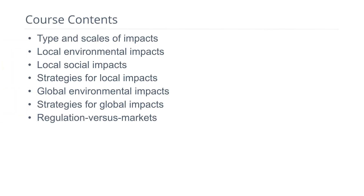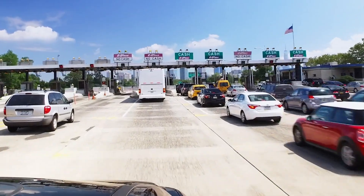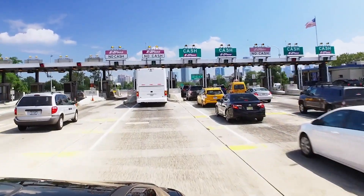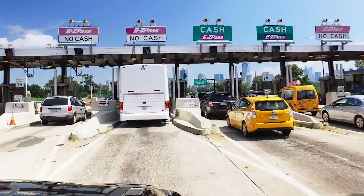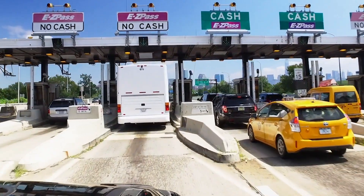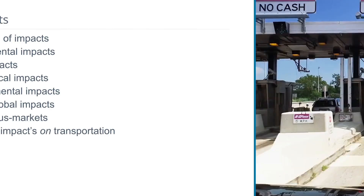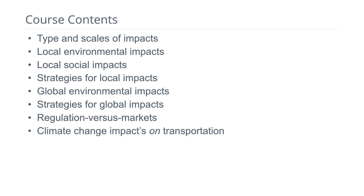We'll then move on to global environmental impacts such as energy use and climate change and strategies for addressing those impacts. One of the key questions in dealing with the environmental, public health, and social equity implications of transportation is how to address these issues. So we'll discuss regulatory approaches versus market-based approaches to these problems. And we'll conclude by summarizing climate change's impact on transportation facilities.